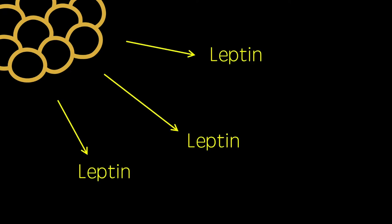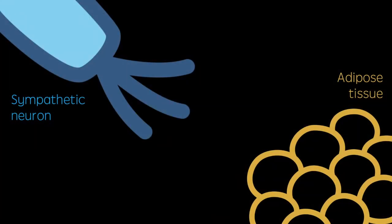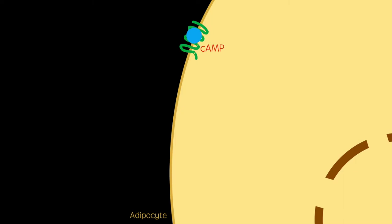The adipose tissue releases leptin, which acts on leptin receptors in the brain. This causes the transmission of sympathetic signals which relay back to adipose tissue. Beta-3 adrenoceptors on adipocytes are activated by the noradrenaline released from the sympathetic neurons. As these receptors are G-protein coupled, this induces the production of the second messenger, cyclic AMP.